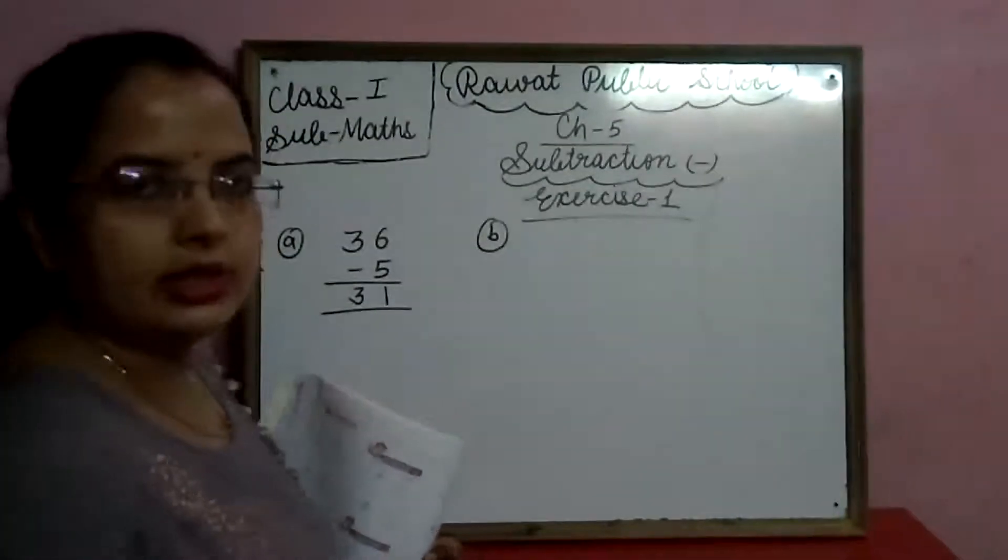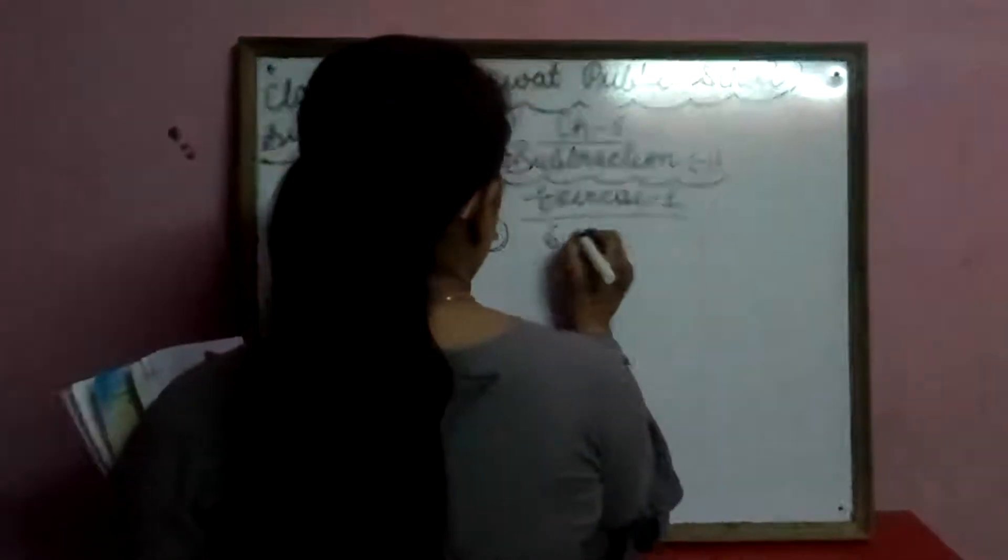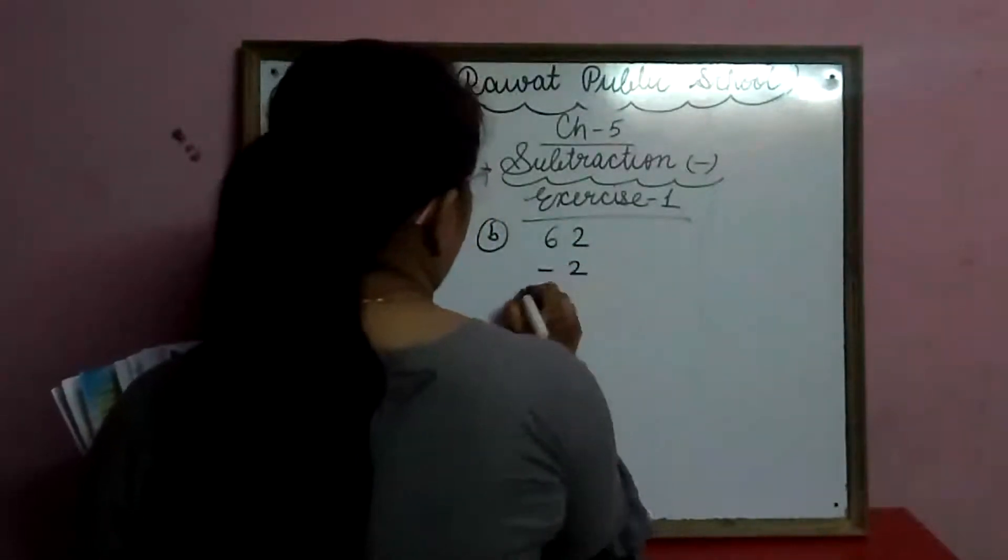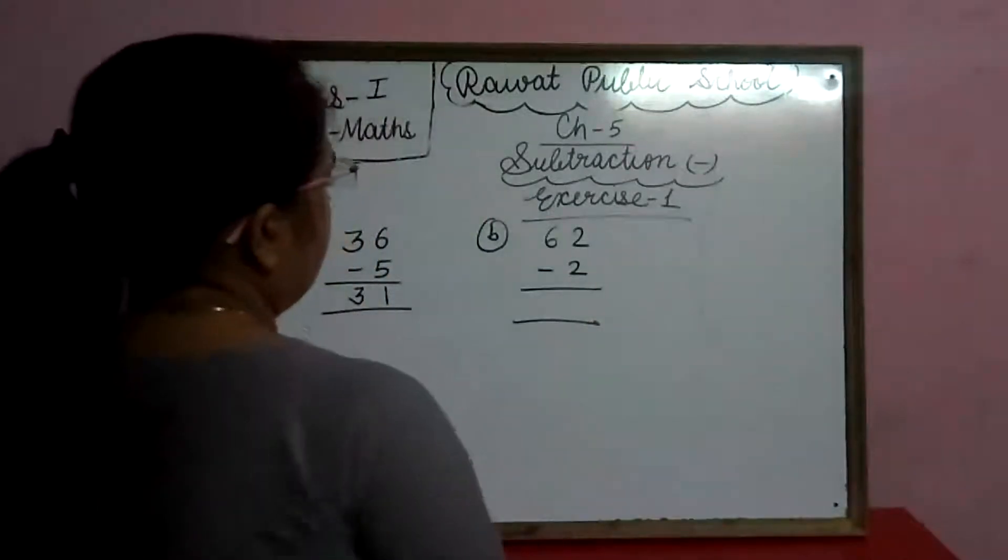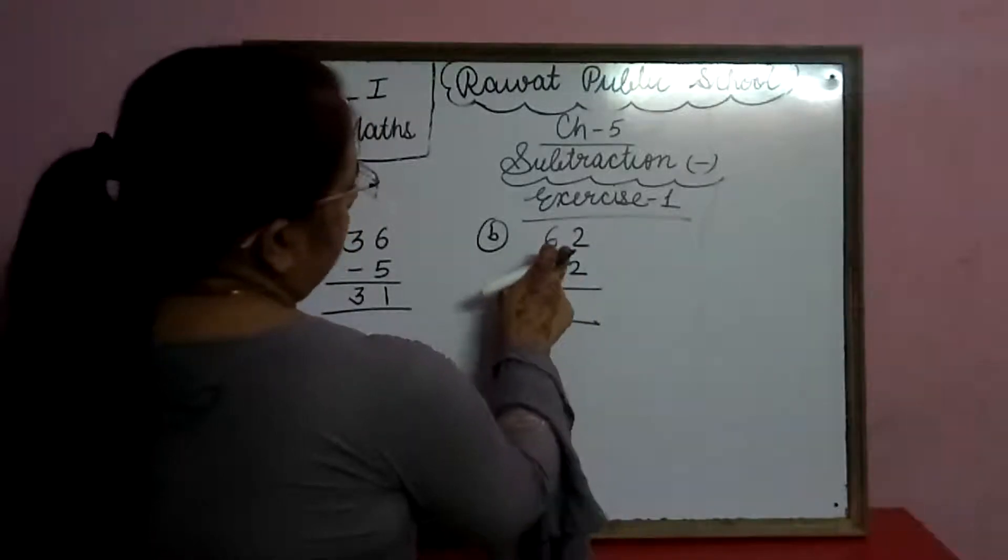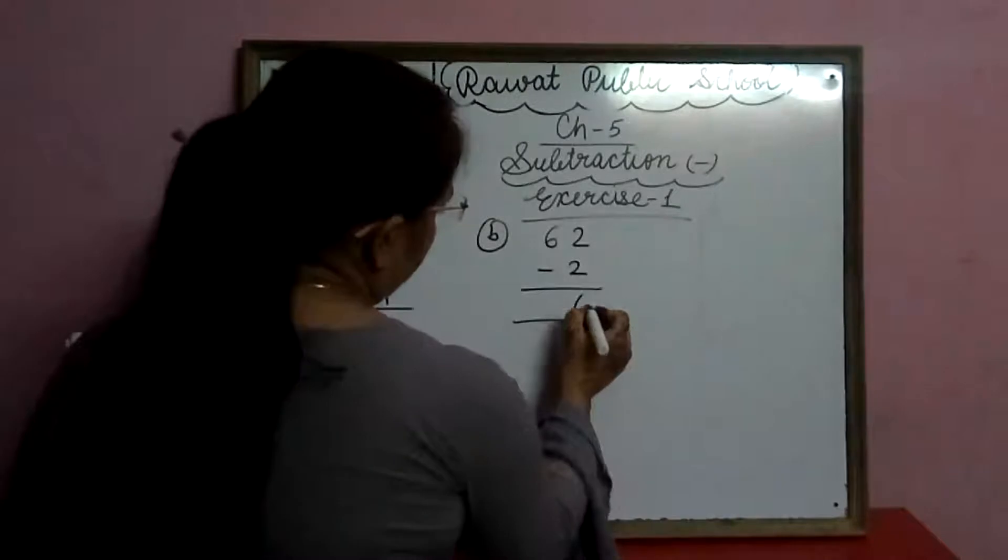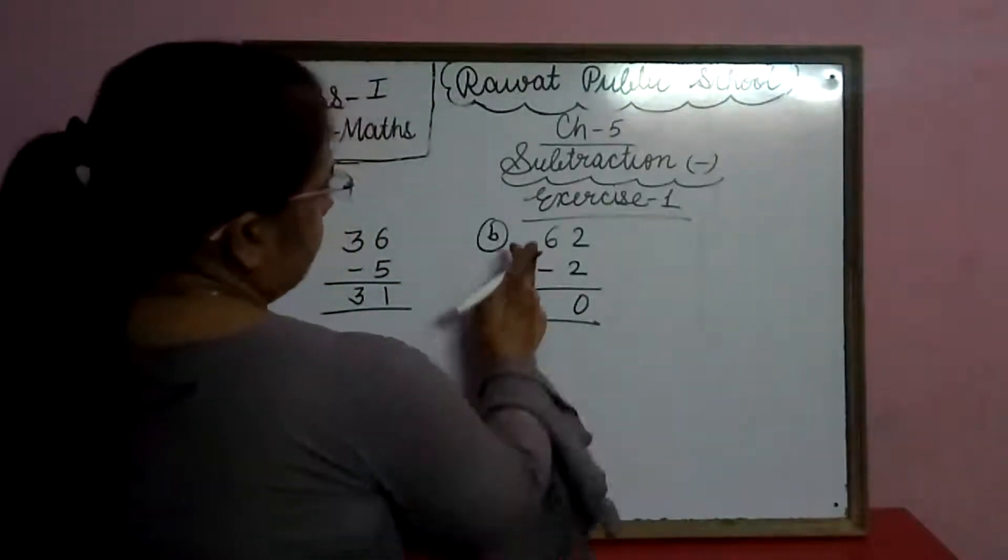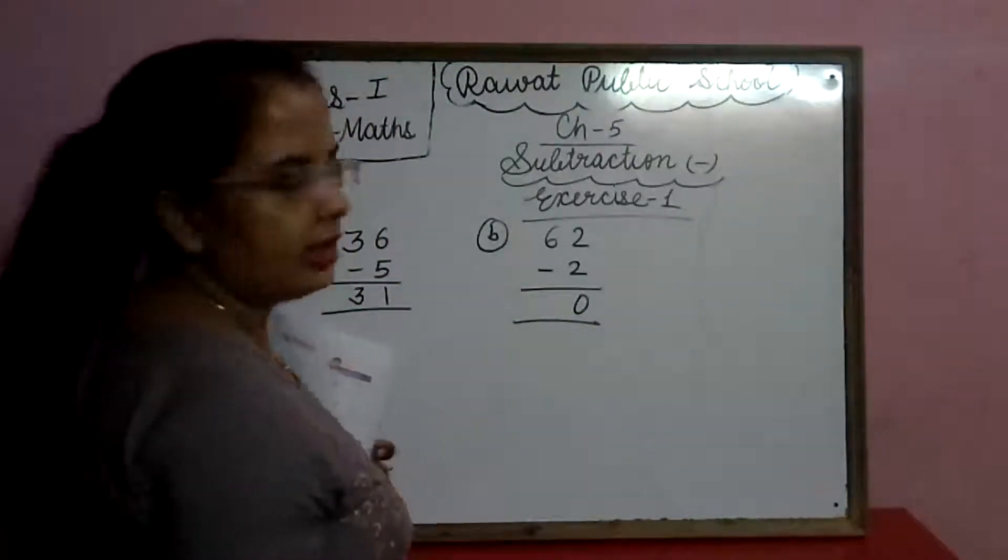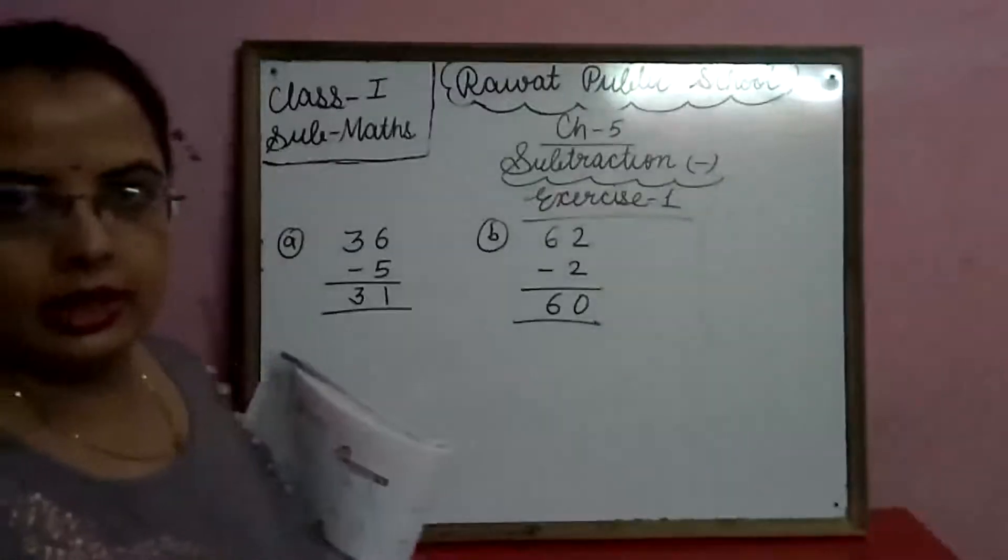Aap phirse haam isse kareinge, toh aap dhyan se dekhiye. 62 minus 2. 62 may se humi 2 less karengo. Same digit ana, 2 basic 2 cut hooga, toh kuch nahi bachega, toh haam yaha zero hi. 6 ke under koi digit nahi hai, toh haam 6 as it is.